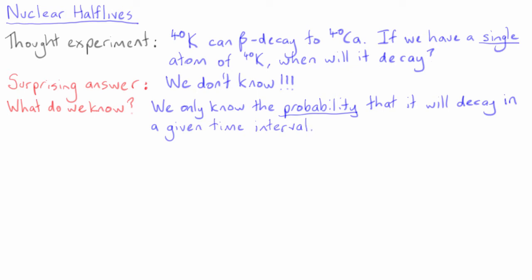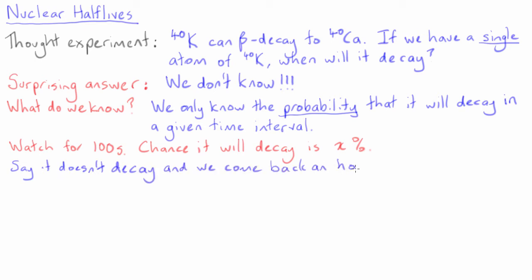What does this mean? It means that if we watch a potassium-40 nucleus for some time interval, let's say 100 seconds, we can know the exact probability that it will decay during this time. Let's call this probability X percent.